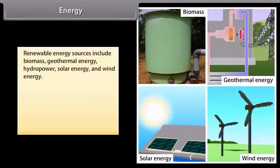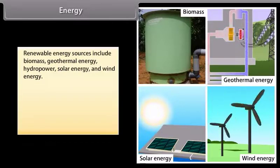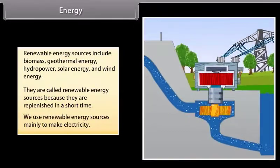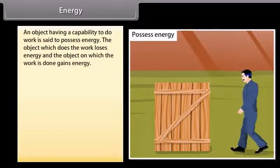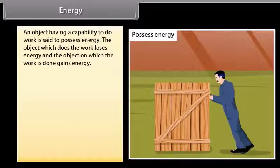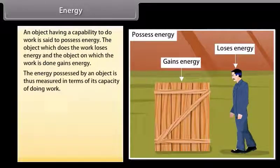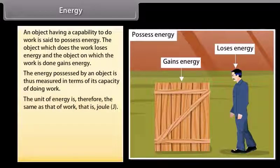Renewable energy sources include biomass, geothermal energy, hydropower, solar energy, and wind energy. They are called renewable because they are replenished in a short time. We use renewable energy sources mainly to make electricity. An object having a capability to do work is said to possess energy. The object which does the work loses energy, and the object on which the work is done gains energy. The unit of energy is the same as that of work — Joule.